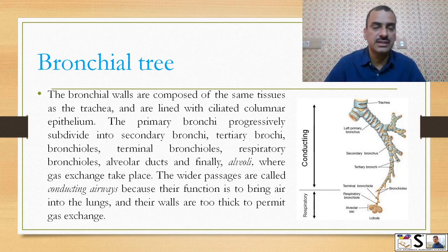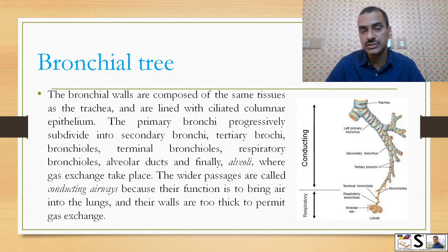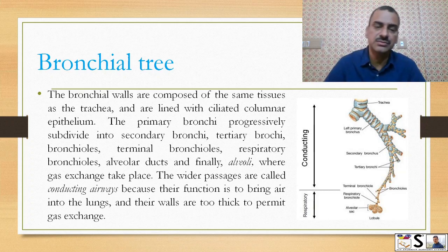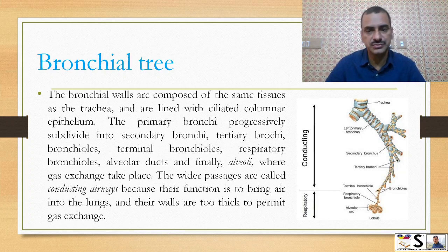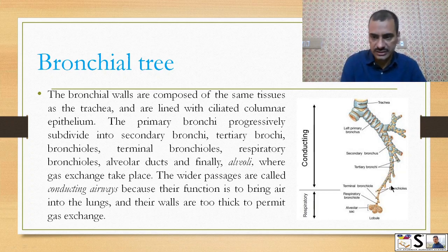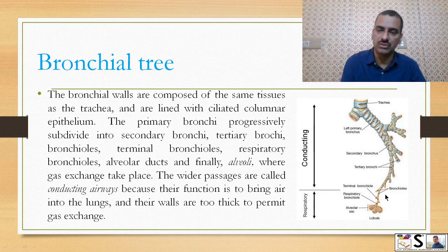From the tertiary bronchi the pathway continues into bronchioles, then smaller pathways called terminal bronchioles, then respiratory bronchioles, then alveolar ducts, and finally the alveoli. This is the full branching sequence of the bronchial tree.